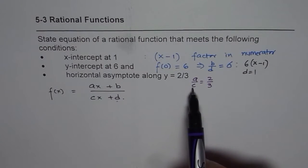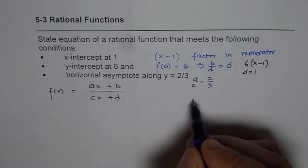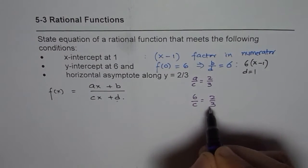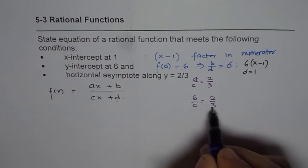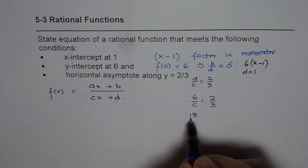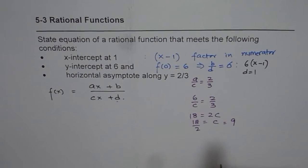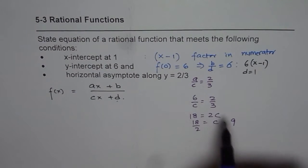Now, if we incorporate the first two conditions, we have 6 times x minus 1, which means a is in fact 6. If a is 6, what is c? So if I write 6 over c equals 2 over 3, then we cross multiply to get 18 equals 2c, or c equals 18 over 2, which is 9. So that could work.